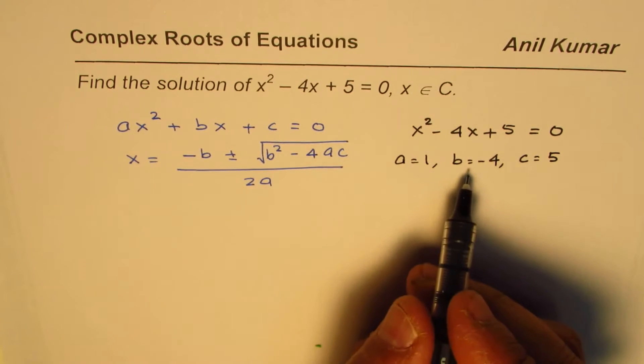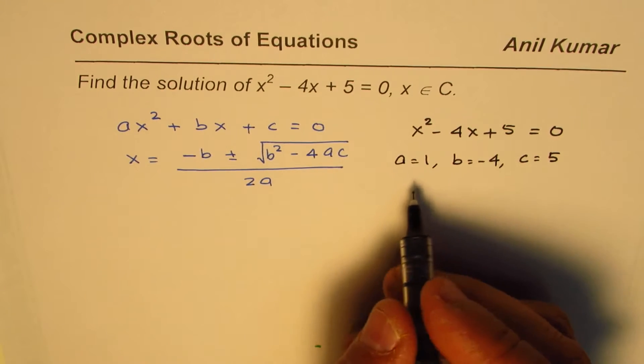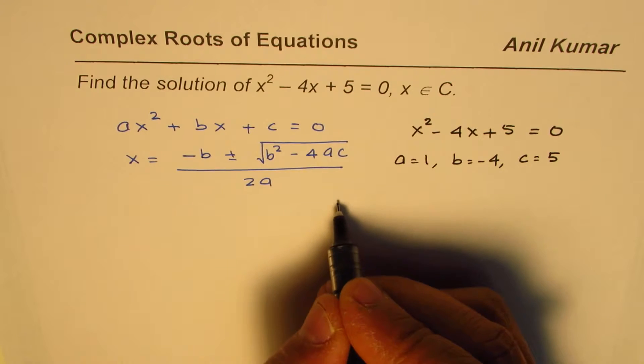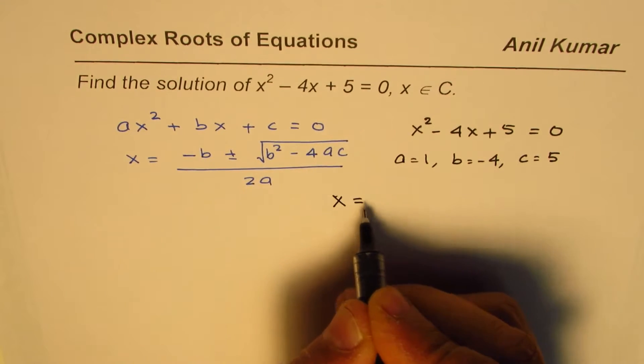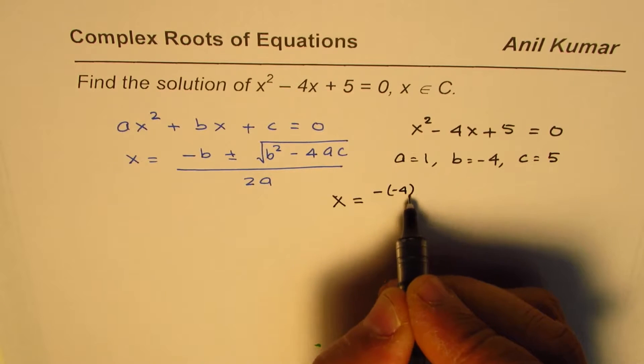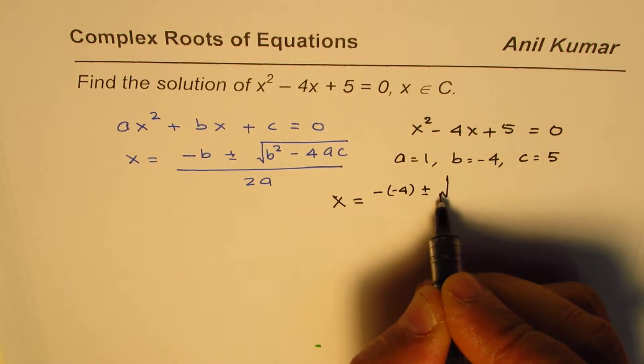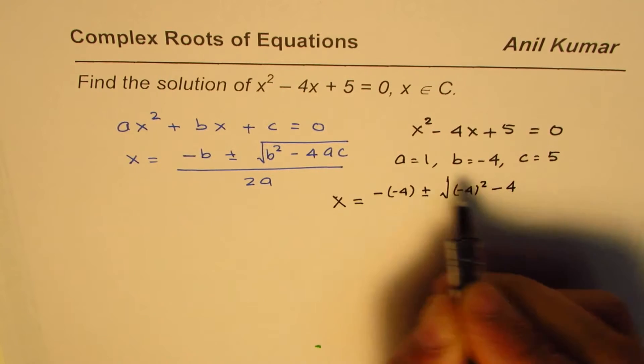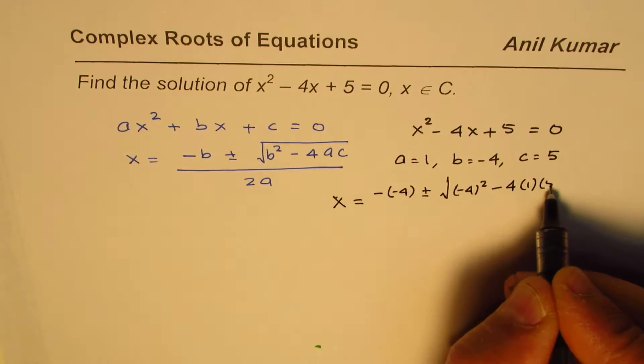When you apply this formula we can write what x is equal to. So x = -b, that is -(-4), plus or minus square root of (-4)² - 4 times a is 1 and c is 5, divided by 2 times a which is 1.